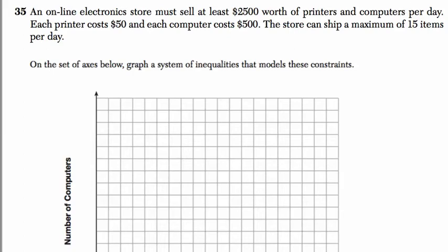Hello and welcome. An online electronics store must sell at least $2,500 worth of printers and computers per day. Each printer costs $50 and each computer costs $500. The store can ship a maximum of 15 items per day and they want us to basically graph the system.